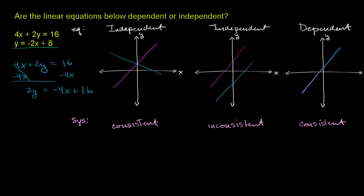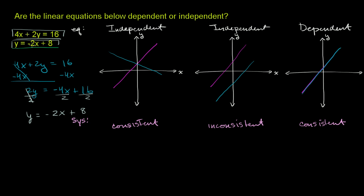Now we can divide both sides by 2, dividing all terms by 2, and we're left with y = -2x + 8. When we put the first equation in mx + b form, we got the exact same thing as the second equation — they simplify to the exact same thing.